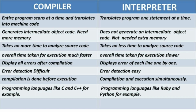Since the compiler scans the whole program at once, it requires less overall execution time. The interpreter's overall execution time is slower compared to the compiler. The compiler displays all errors after compilation, whereas the interpreter displays errors of each line one by one.